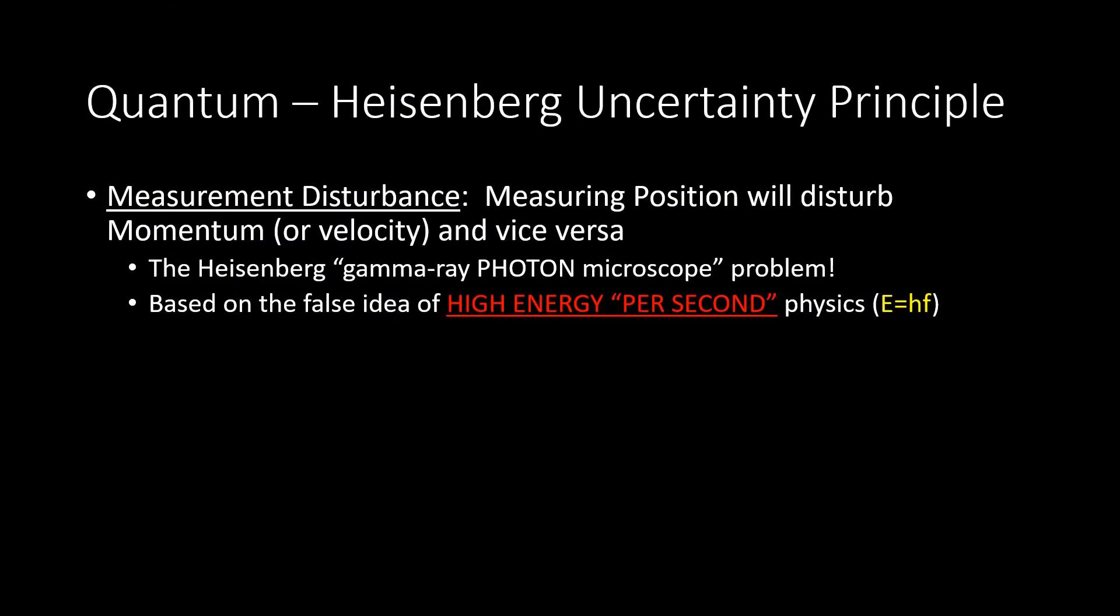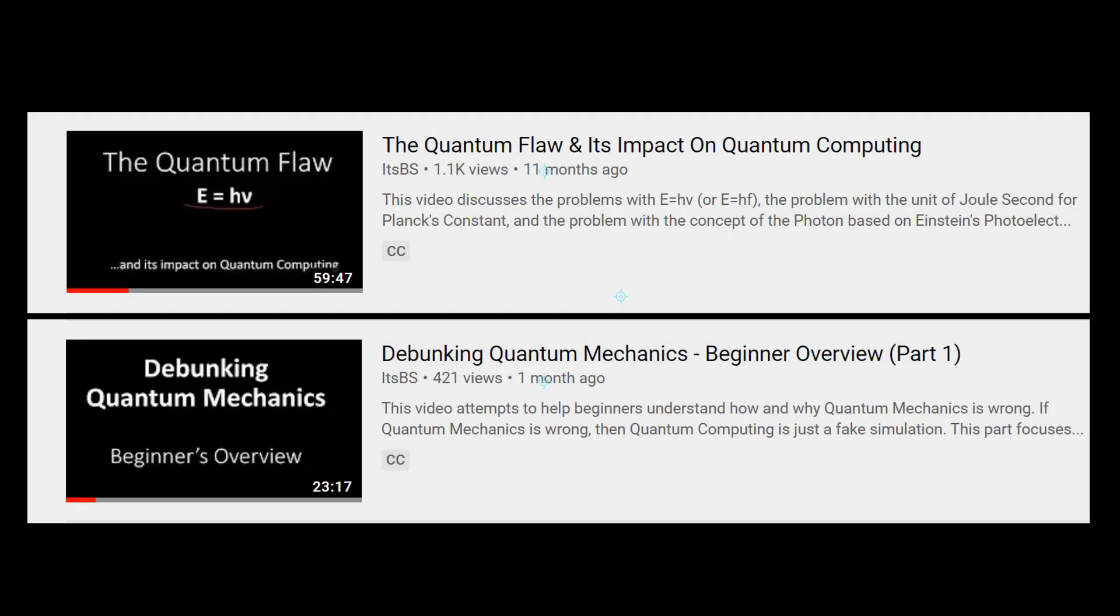This summarizes the problem with Heisenberg's uncertainty principle paper. If you don't understand the issue with this equation, and what I'm calling the Einstein photon flaw, then you can take a look at these two videos on my channel that will help describe the issue to you. This one is the short version, and this one is the longer and more detailed version.